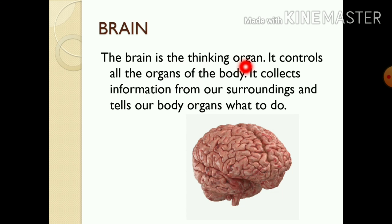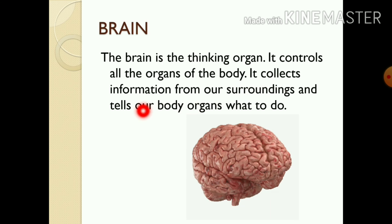The brain is the thinking organ. It controls all the organs of the body. It collects information from our surroundings and tells our body organs what to do.